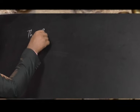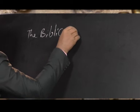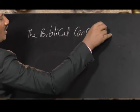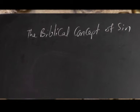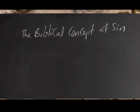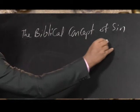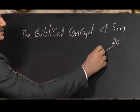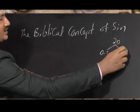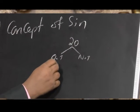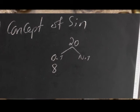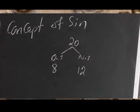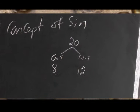We are learning about the biblical concept of sin. As in the last episode, we have seen that there are 20 different words used in the Bible for sin — 8 different words in the Old Testament and 12 words in the New Testament.